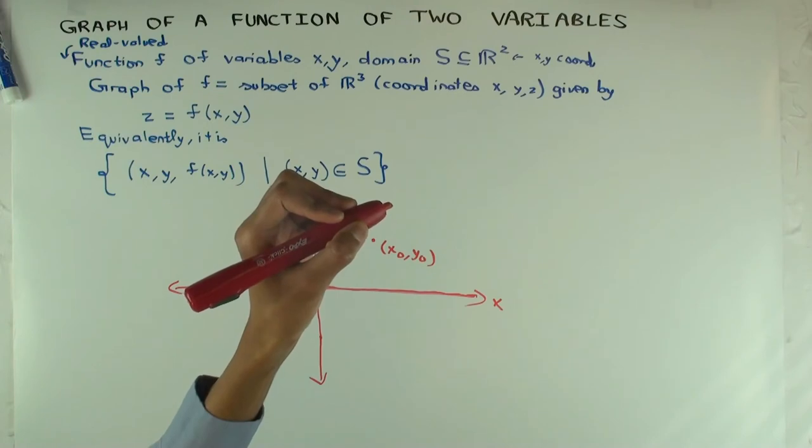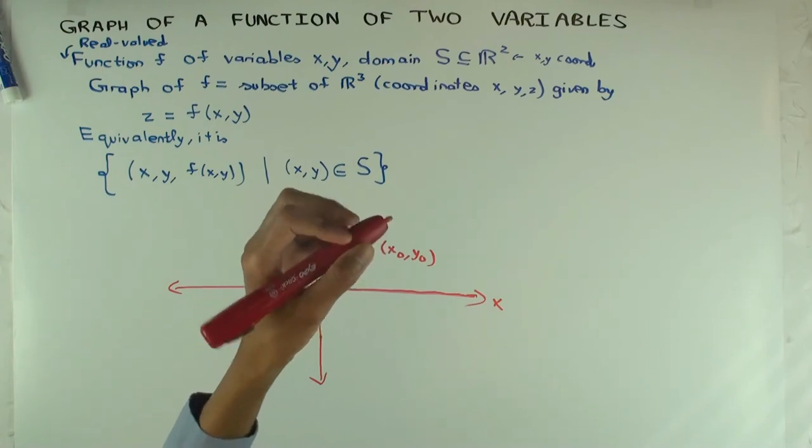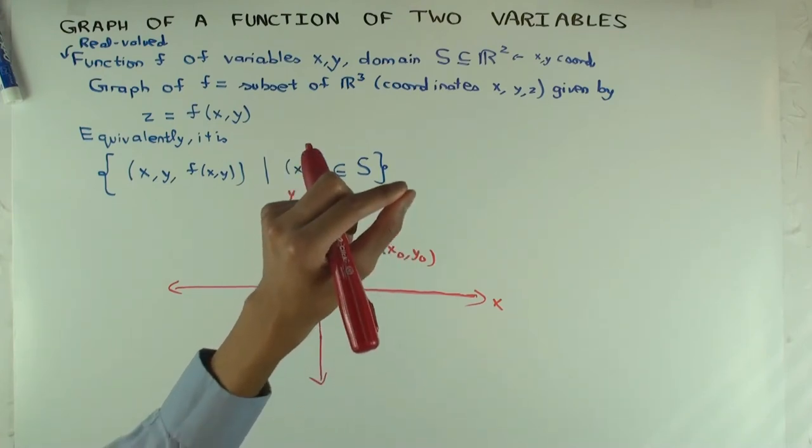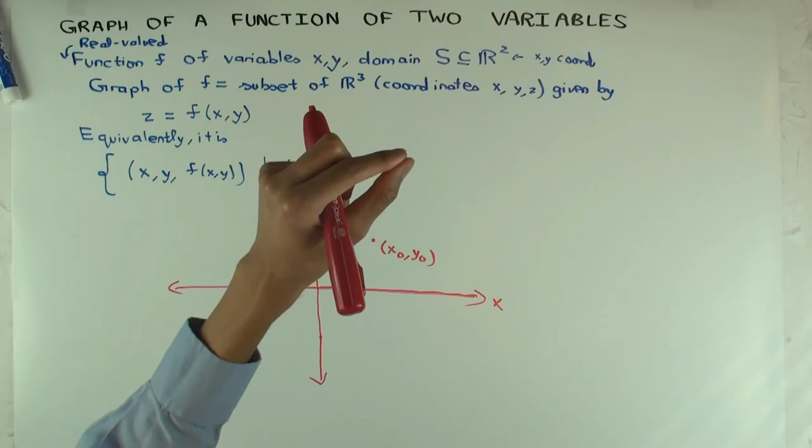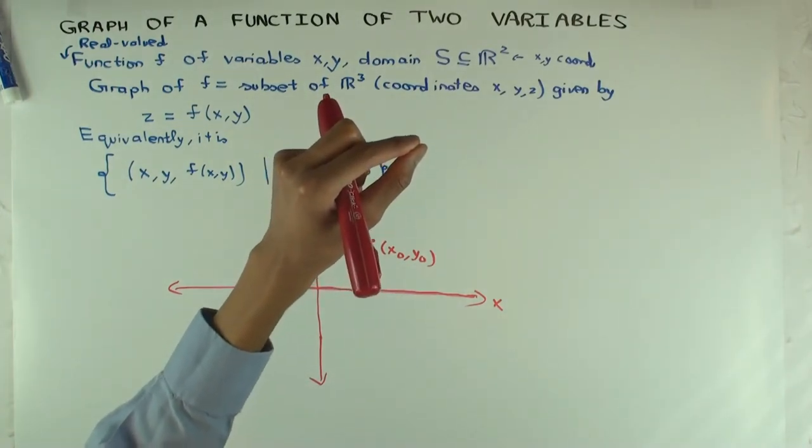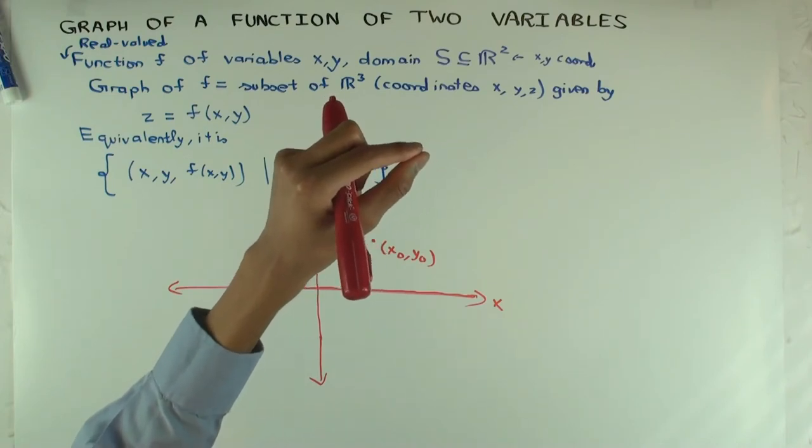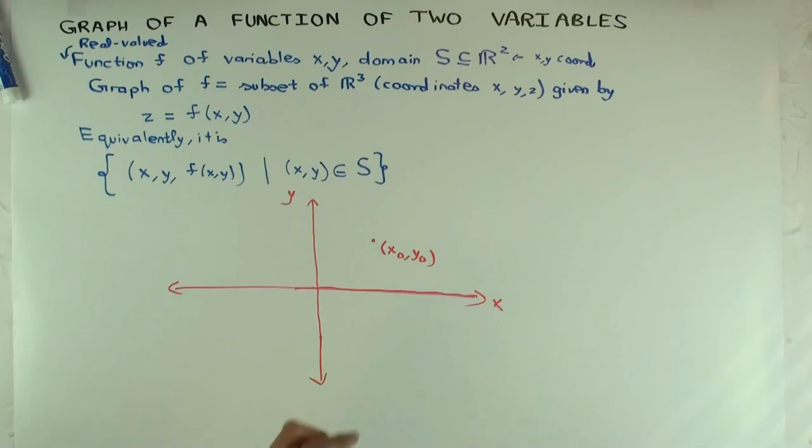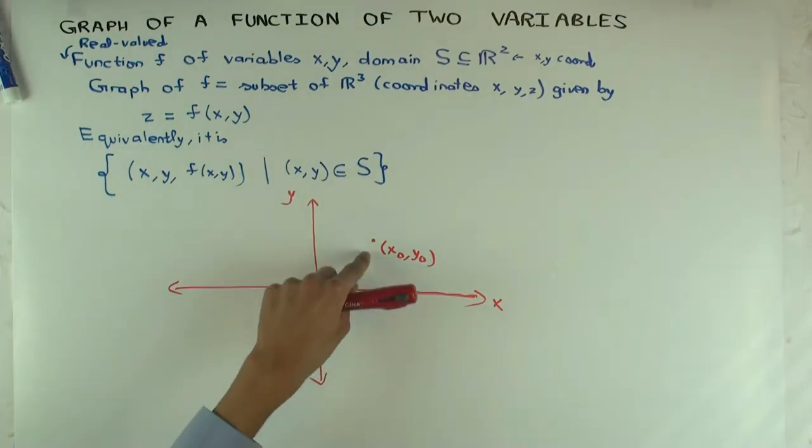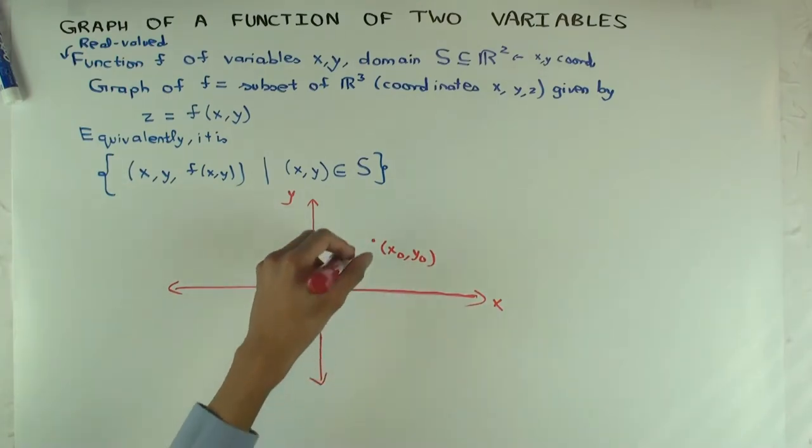(x₀, y₀, f(x₀, y₀))—yeah, so the z coordinate of the point where my fingers are above this point, the z coordinate will be exactly the value of f at this point.